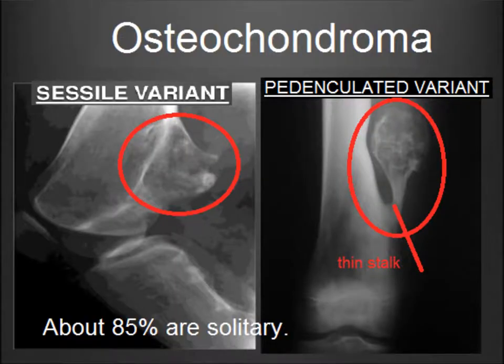Osteochondroma are of two types: sessile variant and pedunculated variant. About 85% are solitary single lesions, and bony lesions are usually accompanied by X-ray findings.